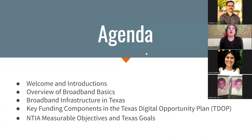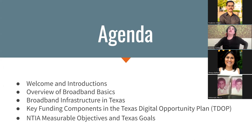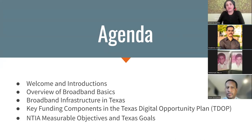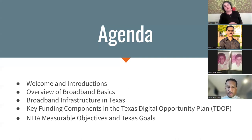We are going to go over an overview of what we're calling Broadband Basics, sometimes called Broadband 101. We're going to talk about this big tent term called Broadband Infrastructure and try to break it down into smaller pieces. We'll spend the rest of the time talking about the key funding components and how that works in tandem with the Texas Digital Opportunity Plan, otherwise known as TDOT. We will also do a reminder about the NTIA measurable objectives and Texas goals.